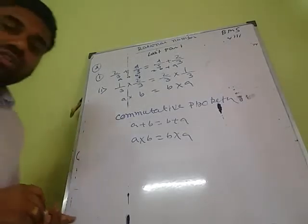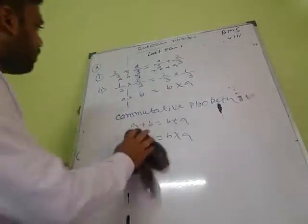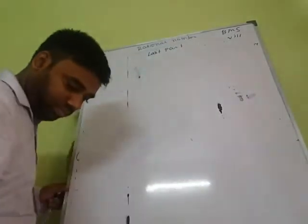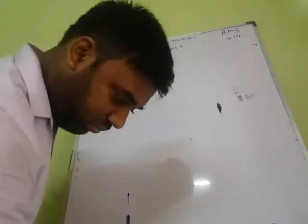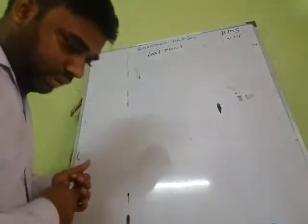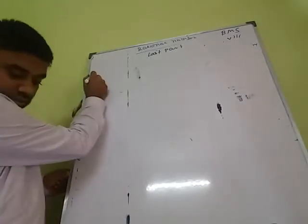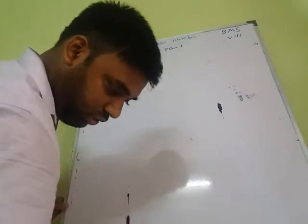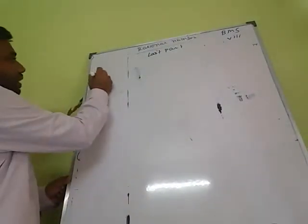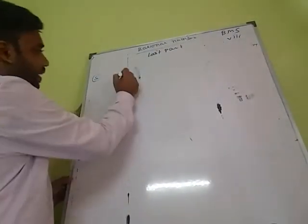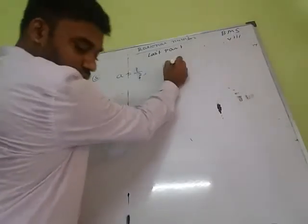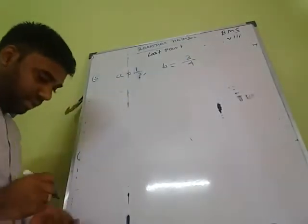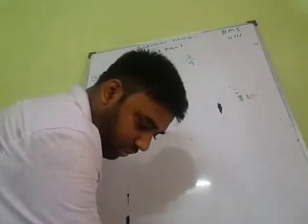Question number 5: if A equals 1 by 2 and B equals 3 by 4, we need to verify the commutative property. We will check both A into B equals B into A, and A plus B equals B plus A.